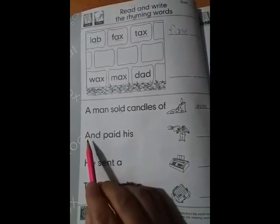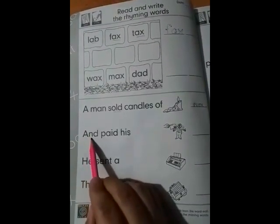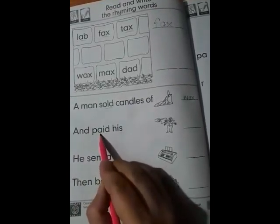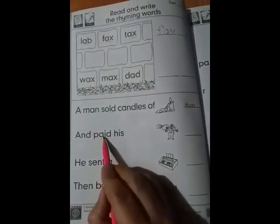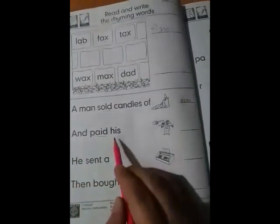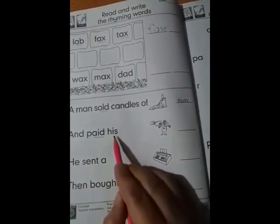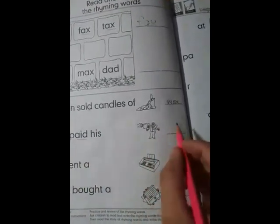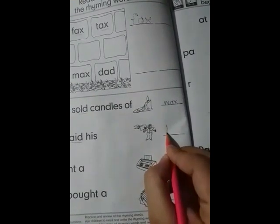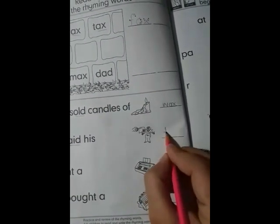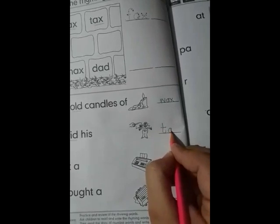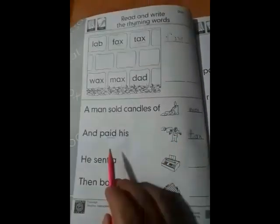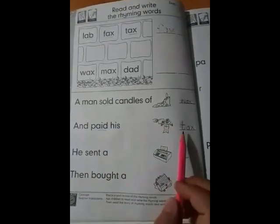Well done. And the second is, and, A N D, and, paid, paid, paid, paid, paid. And paid his, is, his. And paid his, what is this? Tax. Good. We will write all the alphabets through rhymes. And paid his tax.